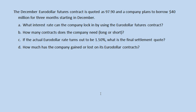Hello everyone, Jeff here with an example of a Euro-dollar futures contract, which represents the interest on $1 million borrowed in a future three-month time period. In this example, we have a December contract with a quote of $97.90 and a company that needs to borrow $40 million for three months starting in December.